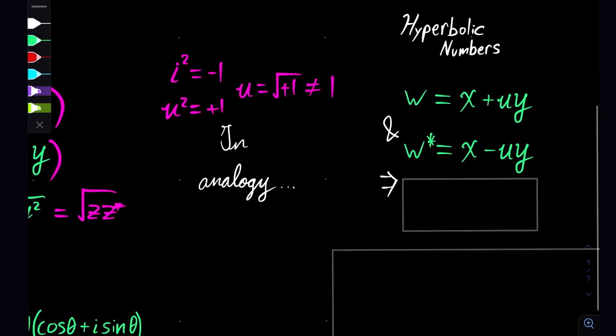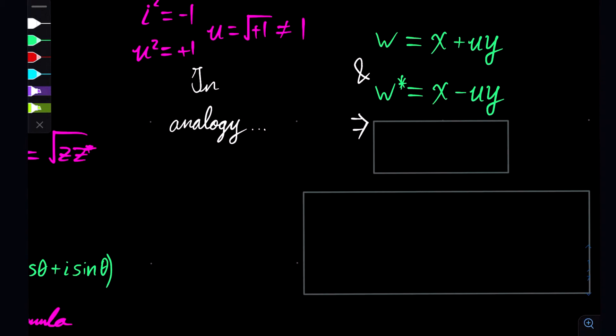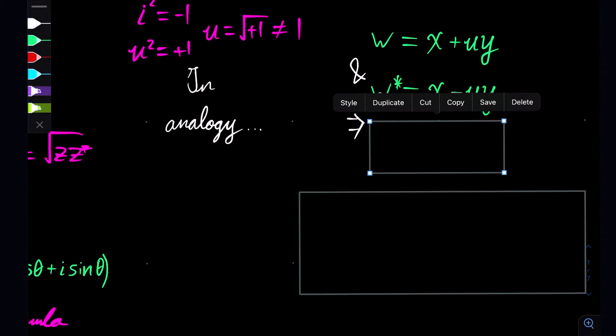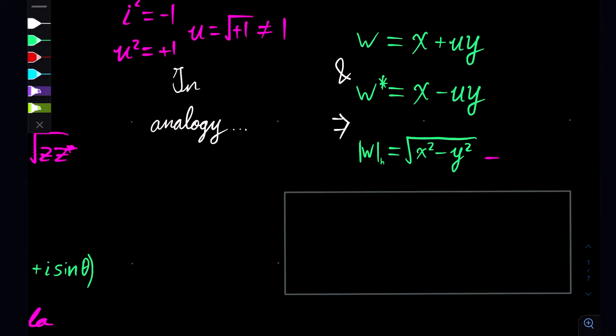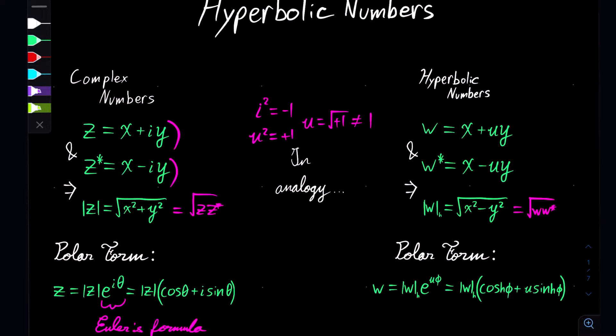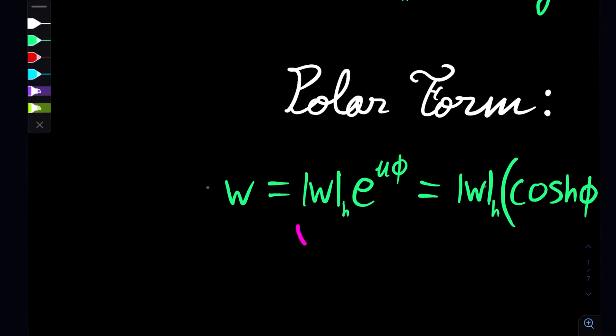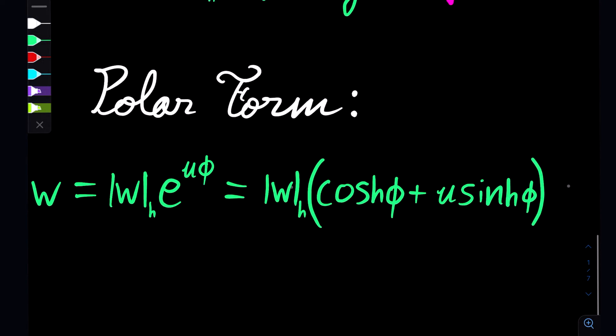Continuing this analogy, we get the hyperbolic conjugate, which is just formed by negating the u term, which then implies that you also have a hyperbolic modulus or hyperbolic distance, which is formed exactly in the same way as the complex one by square rooting w times w*. You can also create this into polar form where you have the hyperbolic magnitude times the equivalent of Euler's formula, and you have the hyperbolic versions of cosine and sine, cosh and sinh.